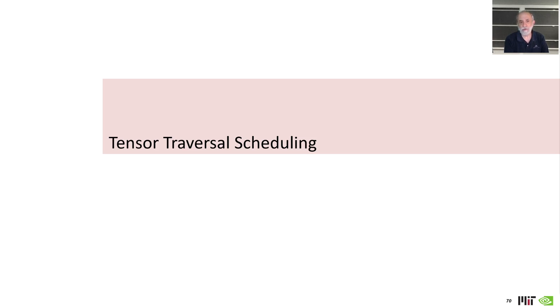I want to return to the problem of representing the scheduling in space and time of activity in an accelerator so that we can provide a mapping for an accelerator independent of whether it's operating on dense data or sparse data or a compressed or uncompressed representation.